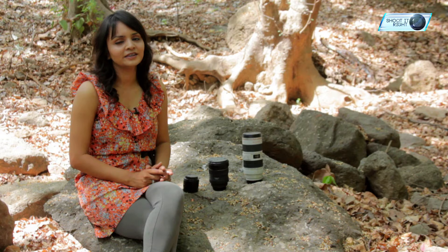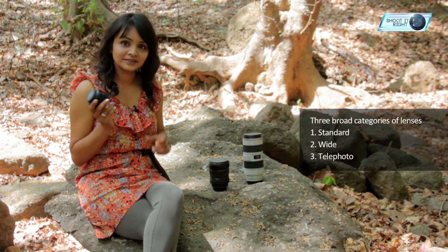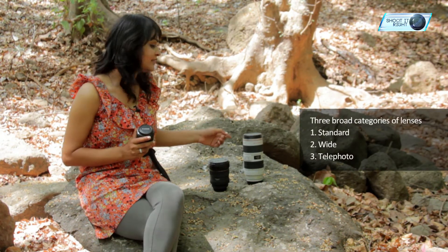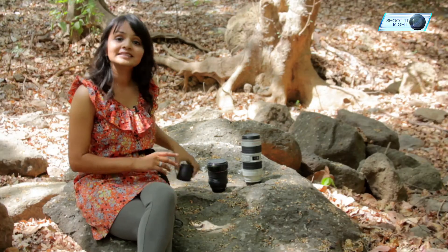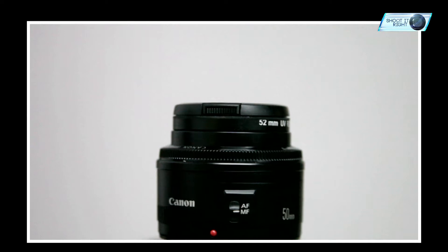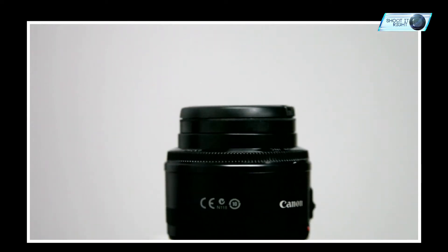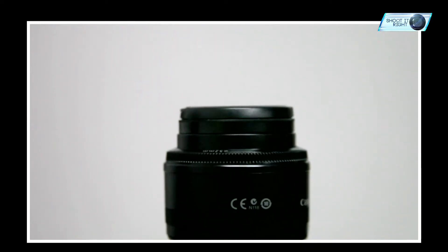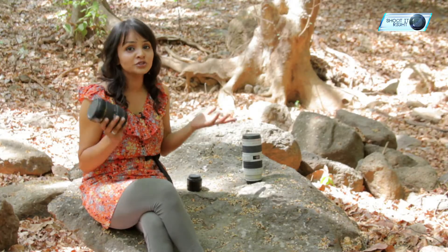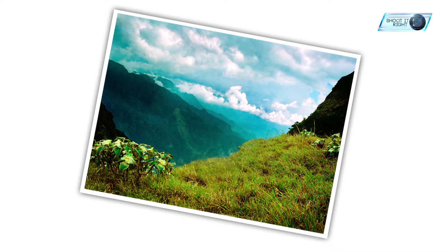Lenses are classified into three basic categories: standard, wide, and telephoto. Standard lens captures the image exactly the way how a human eye would view. It's known as a normal lens and the focal length is approximately 50 to 55mm. Wide angle lens is usually used for covering a wider area, ideally used for landscapes.